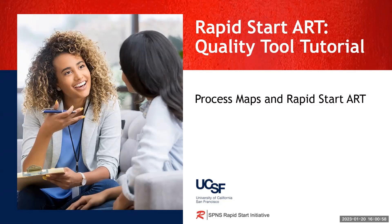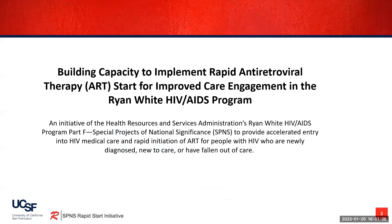Greetings, and welcome to this brief tutorial on using process maps to establish or improve a rapid start antiretroviral therapy program for persons with HIV. This tutorial is brought to you by the University of California San Francisco Rapid Start Initiative through funding from the Health Resources and Services Administration HIV AIDS Bureau Ryan White HIV AIDS Program Special Projects of National Significance.